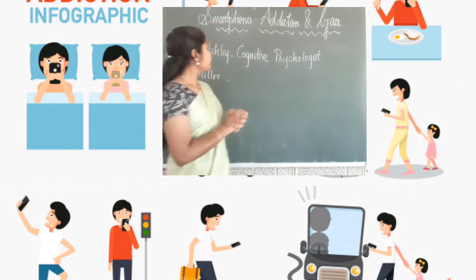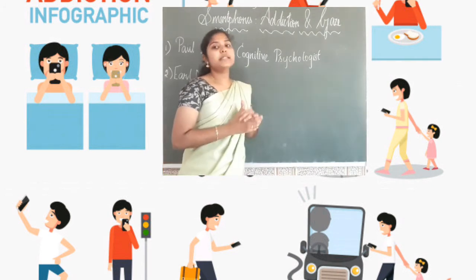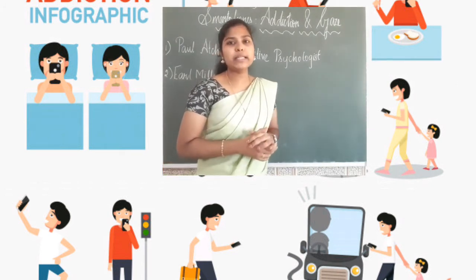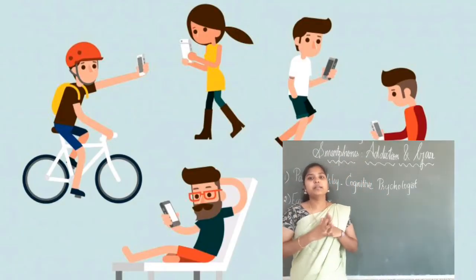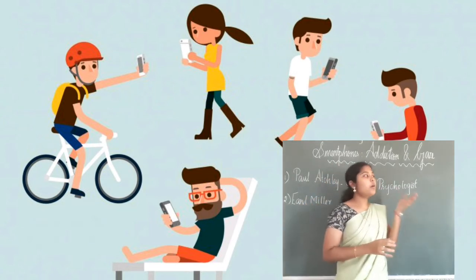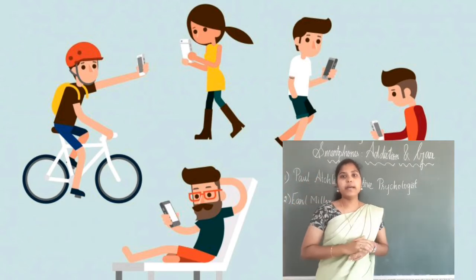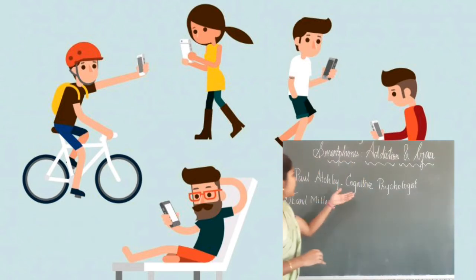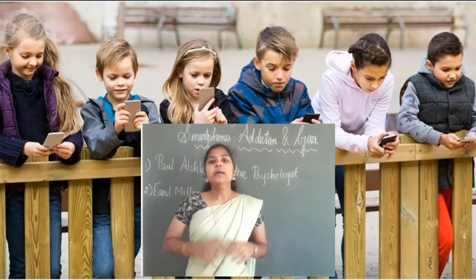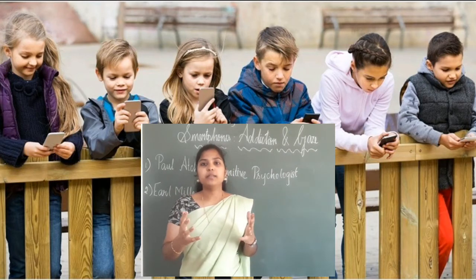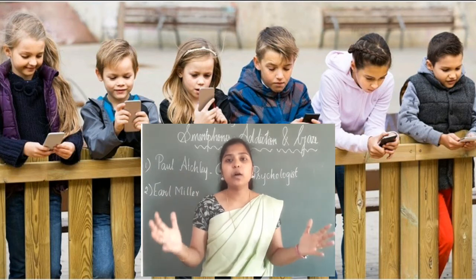Now let's see. Paul Axley is a cognitive psychologist. What is meant by cognitive? It deals with the processing of information gathered in the human brain. So cognitive is always related to knowledge, related to our brain. This psychologist Paul Axley is saying that people are social organisms. Human beings are the social organism.